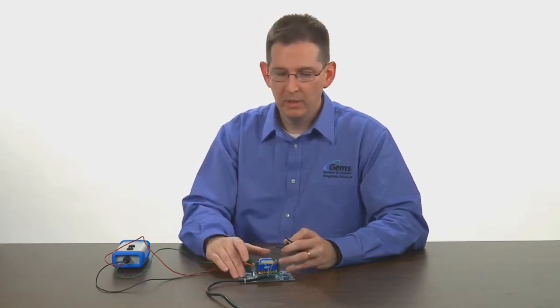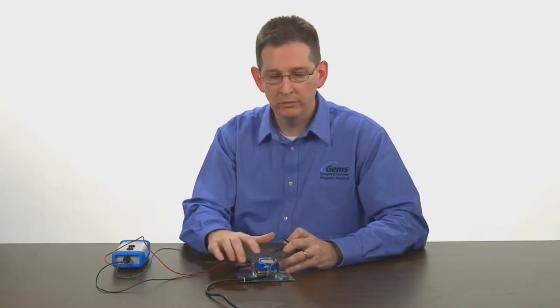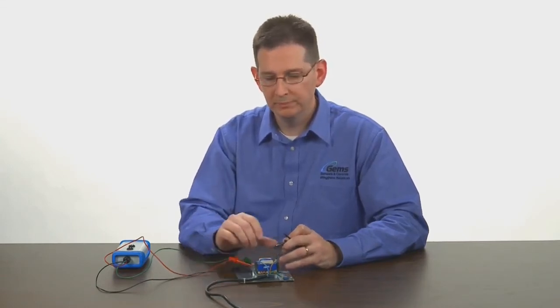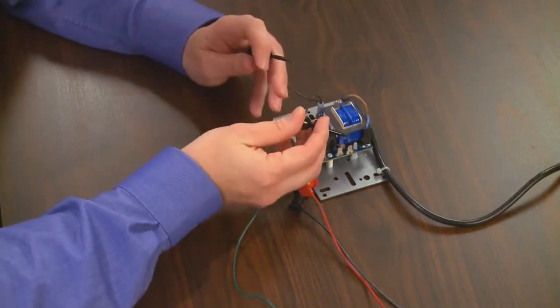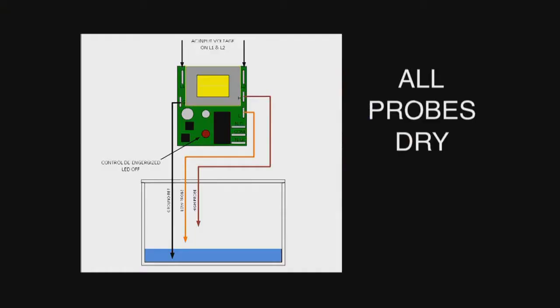The board we have is an open board Series 16 direct mode unit. The direct mode indicates that it will operate when probes become wet and de-energize when probes are dry. To do this we bring in our AC power to the two line voltages, and we use a series of jumpers to simulate either single level service or differential service.